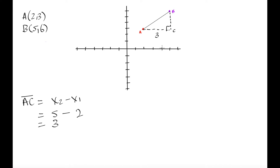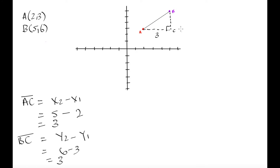Now we can do the same thing with BC. Since BC is only changing in the y-dimension, the x-coordinate remains at x equals 5 for both points B and C. So we calculate BC as y2 minus y1, which is 6 minus 3, also equal to 3. So BC also has a length of 3 units, which we can confirm by counting 1, 2, 3 units down the y-axis.